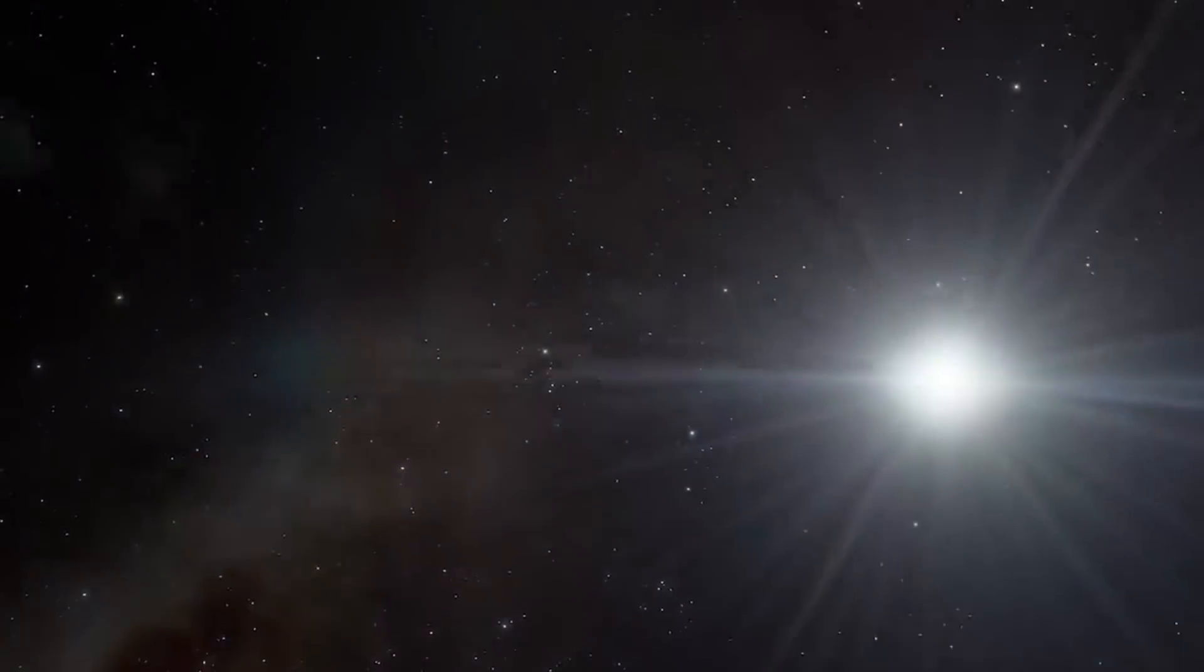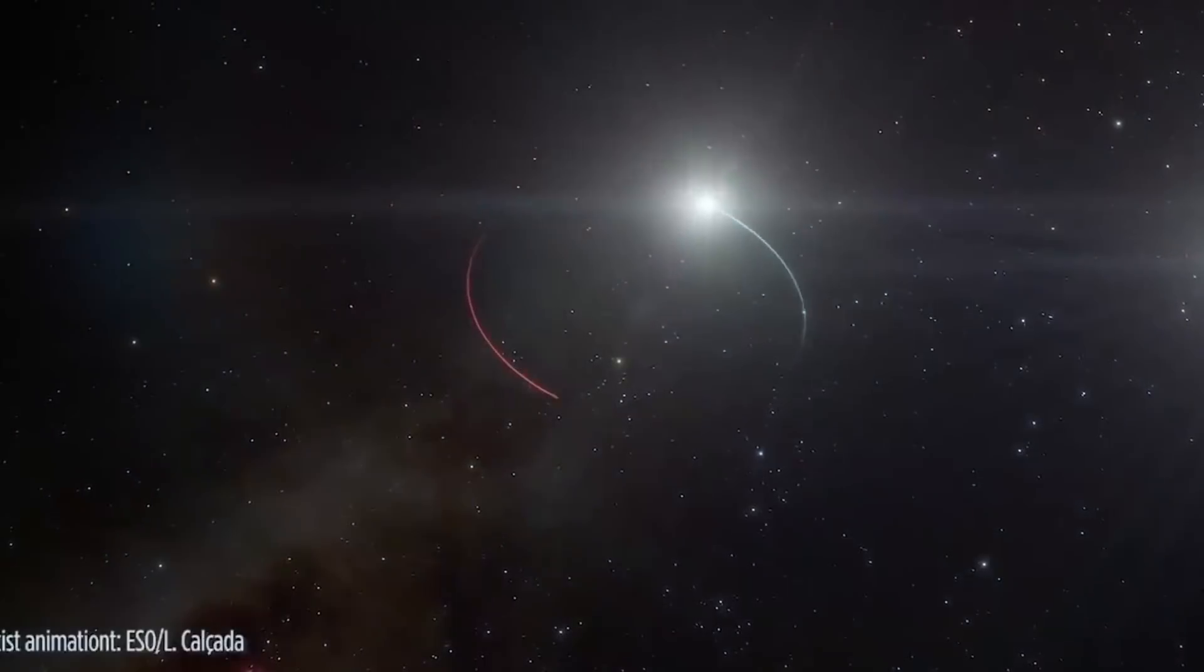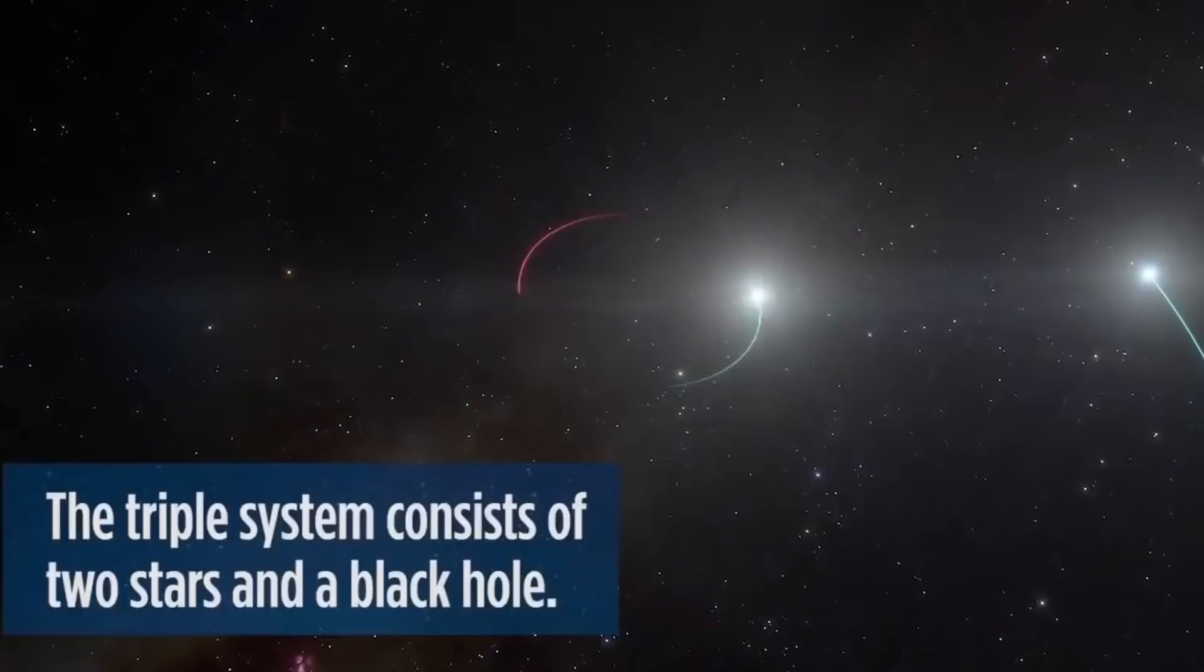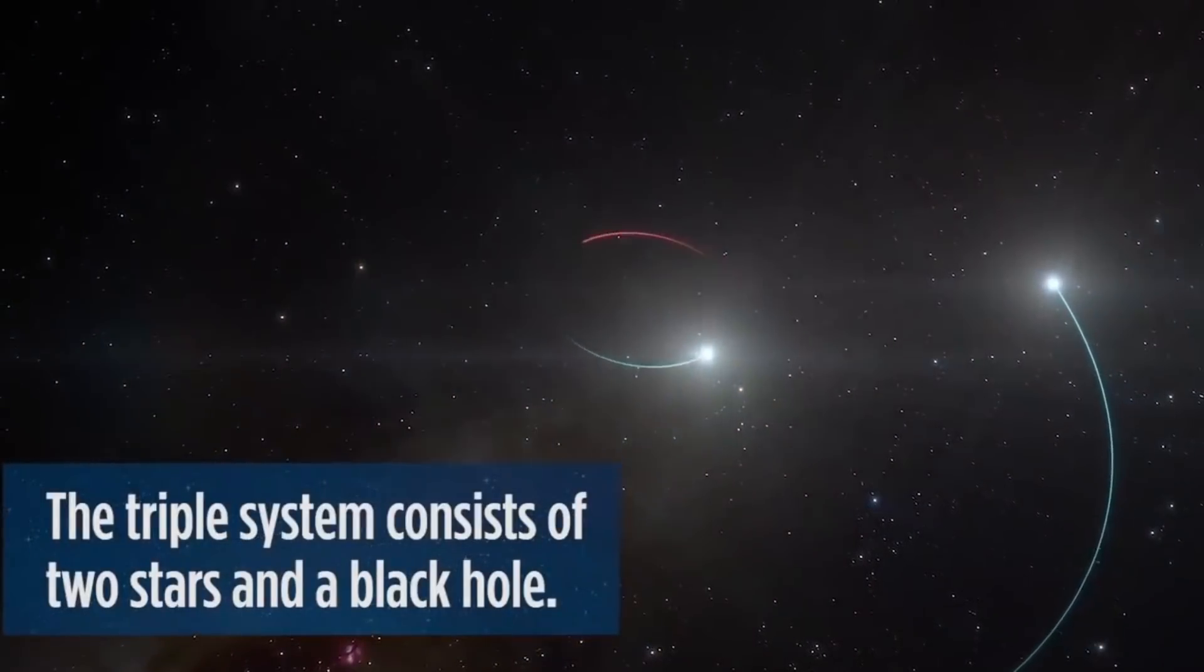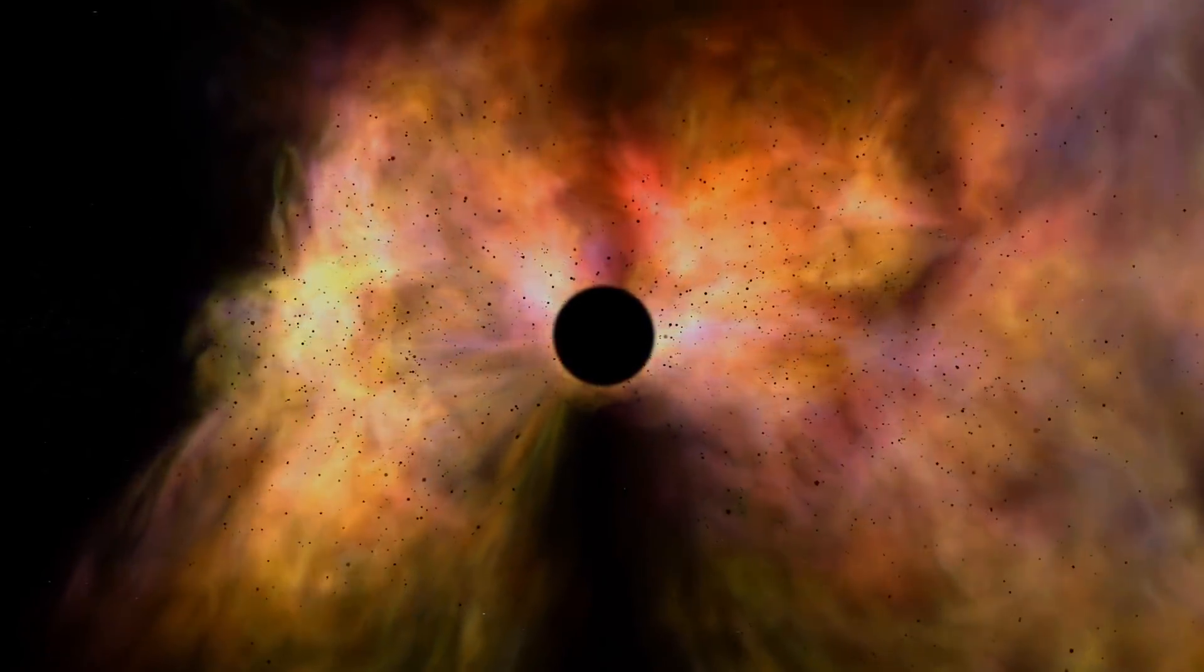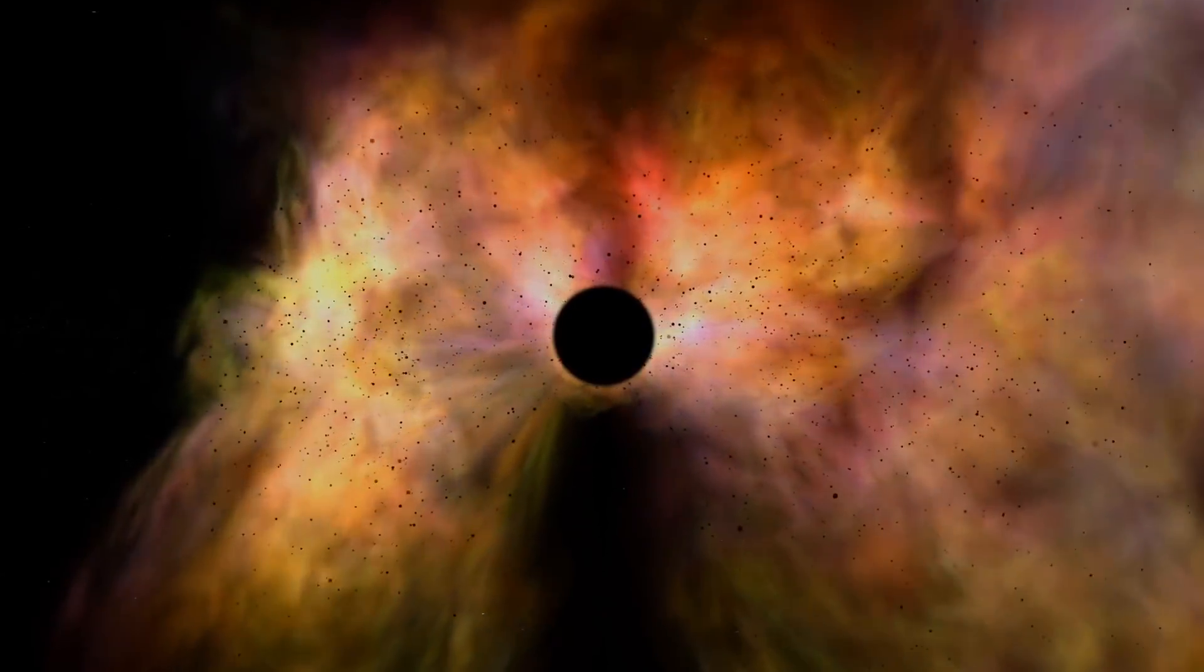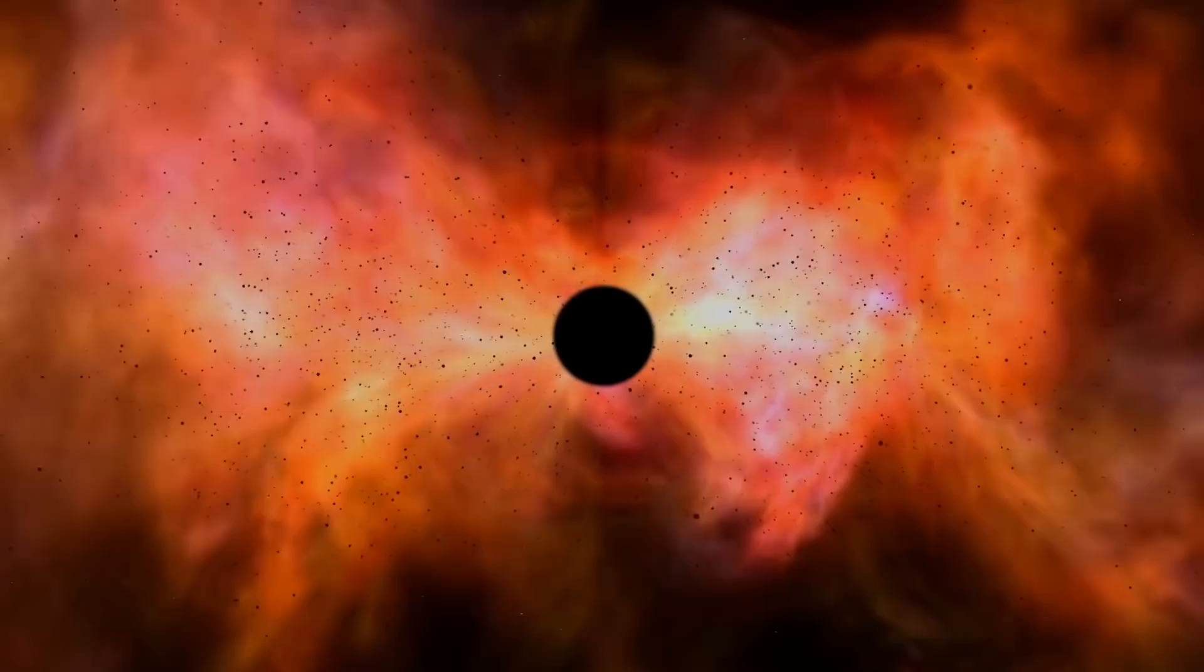Back then, initial observations suggested this was probably some kind of a triple system, with something in the middle being invisible and pulling on the two other stars. That invisible something was assumed to be some kind of a black hole, and not just any black hole. It was assumed to be an extremely rare, very low mass black hole of approximately 4.2 solar masses, which would also make this the smallest confirmed black hole ever detected, placing it in a very interesting category where it's basically just a little bit more massive than a typical neutron star.